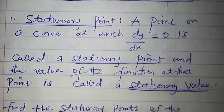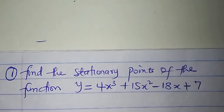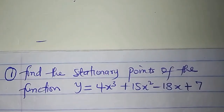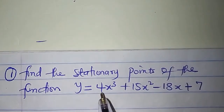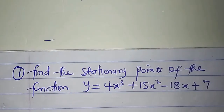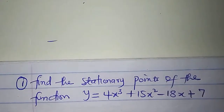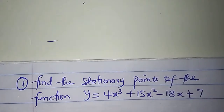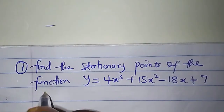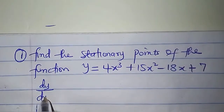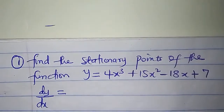Look at this problem. I want to determine the stationary points of the function y = 4x³ + 15x² - 18x + 7. So I'll have to set the gradient function to zero. The gradient function will be dy/dx — let's differentiate.